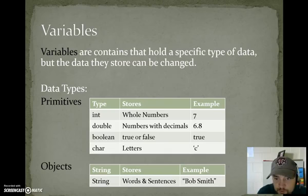Boolean stores true or false. An example would be true. Notice it doesn't have any quotes around either side of it. It's not text. It's not a letter. It's just the value true. Char stores letters or characters, and they have single quotes around them. Single quote C, single quote is the letter C.